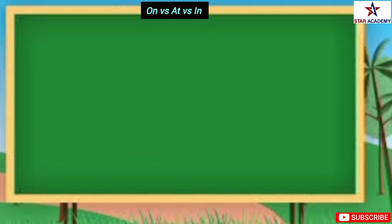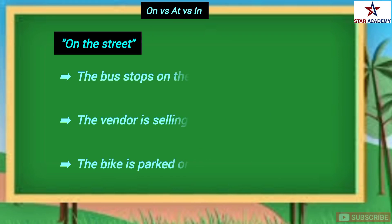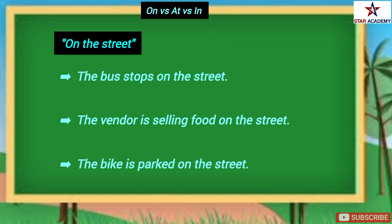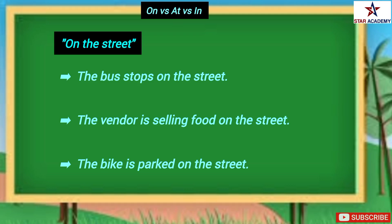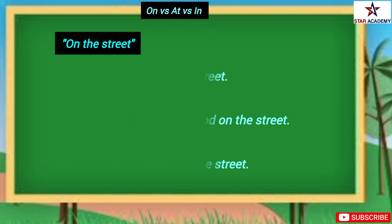Now let's look at examples of 'on the street'. 'The bus stops on the street' means the bus stops at a designated point on the surface of the street. 'The vendor is selling food on the street' means the vendor is selling food from a cart or stand on the surface of the street. 'The bike is parked on the street' means the bike is physically located on the surface of the street.